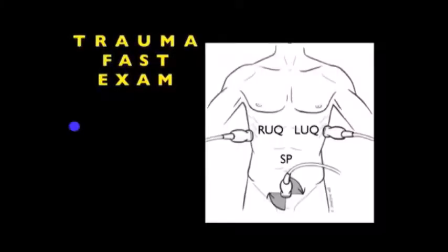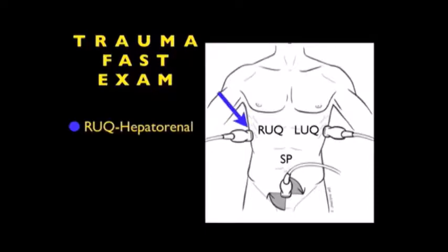In this module, we're going to focus entirely on the trauma FAST exam. Specifically, we're going to look further into the right upper quadrant view, also known as the hepatorenal view.